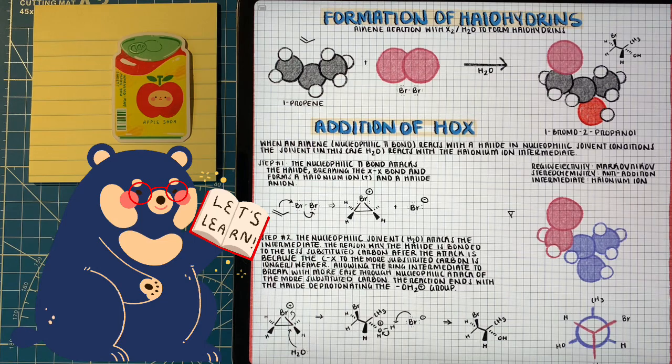Next reaction I want to analyze is the formation of halohydrins. We have an alkene and we have a halide, and that looks really similar to the reaction we just looked at before. But the difference is the solvent. In the last reaction, we had an inert solvent. In this case, we have a polar solvent, water.